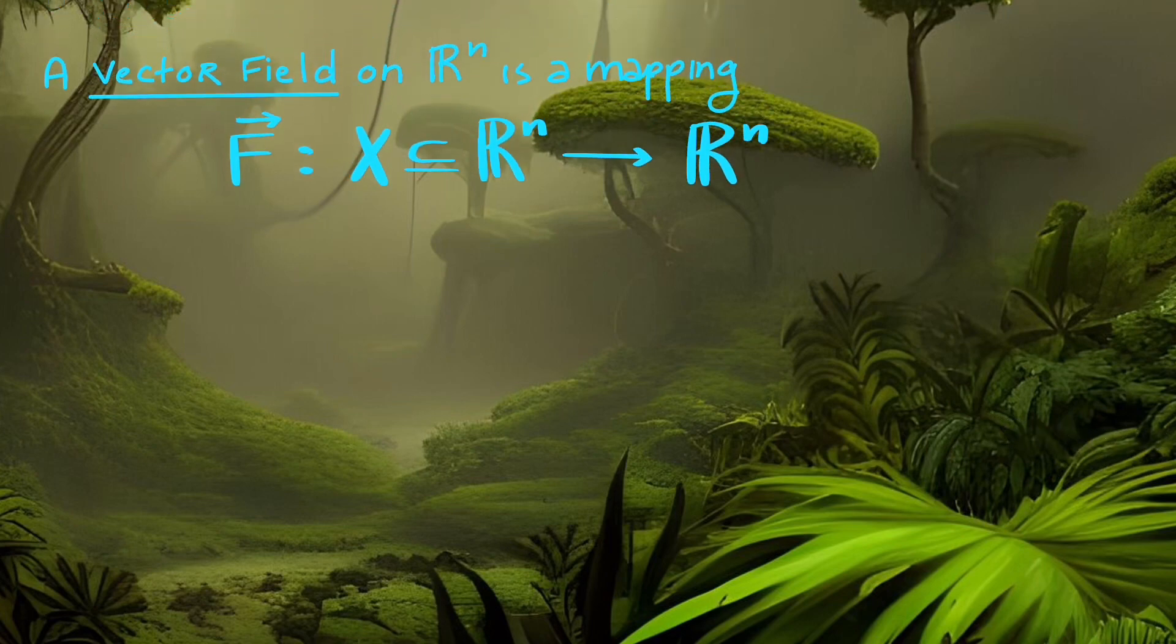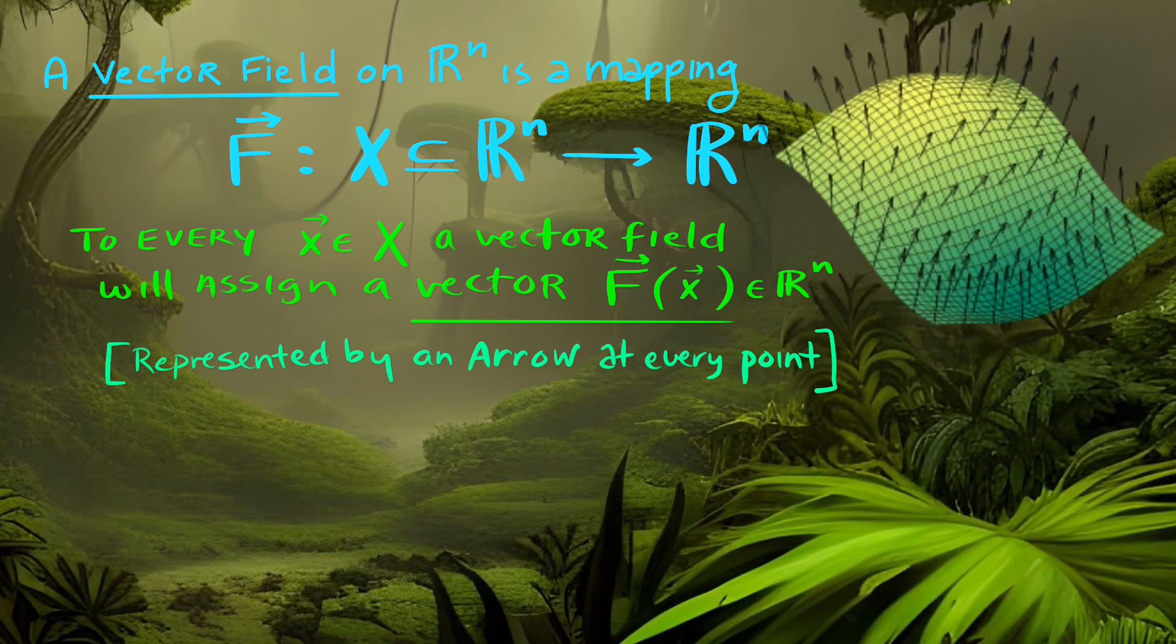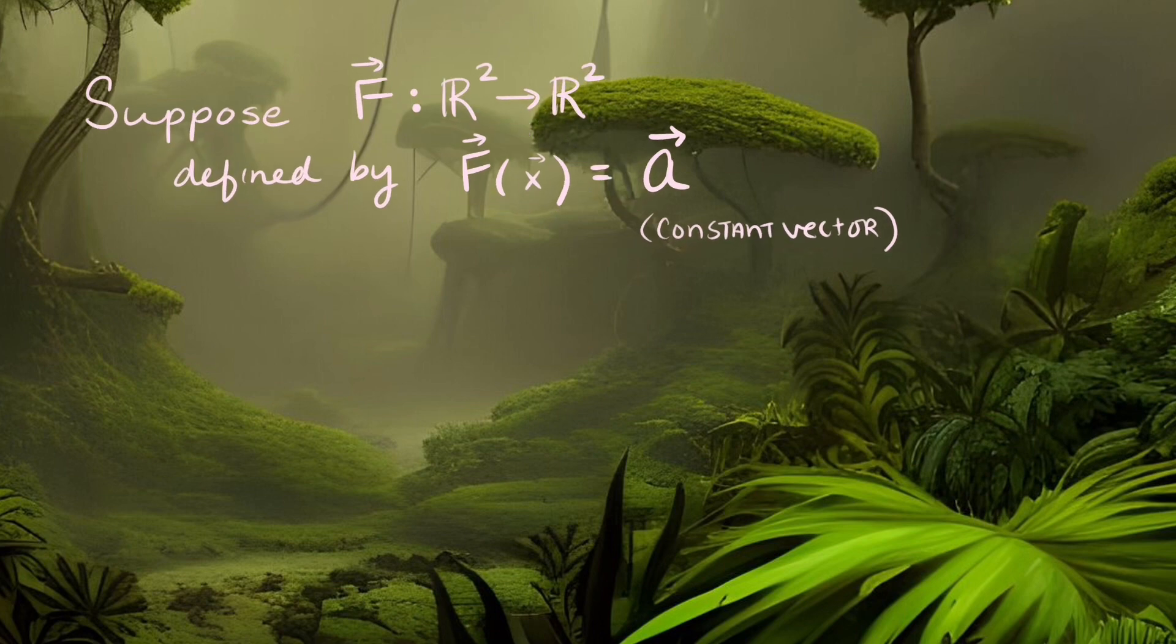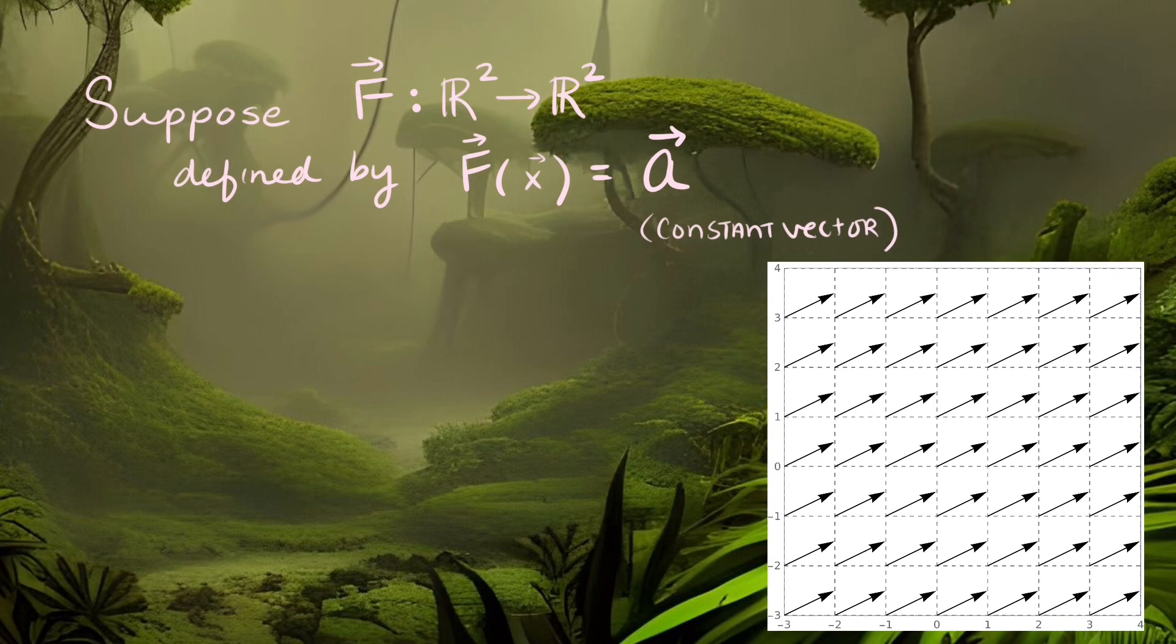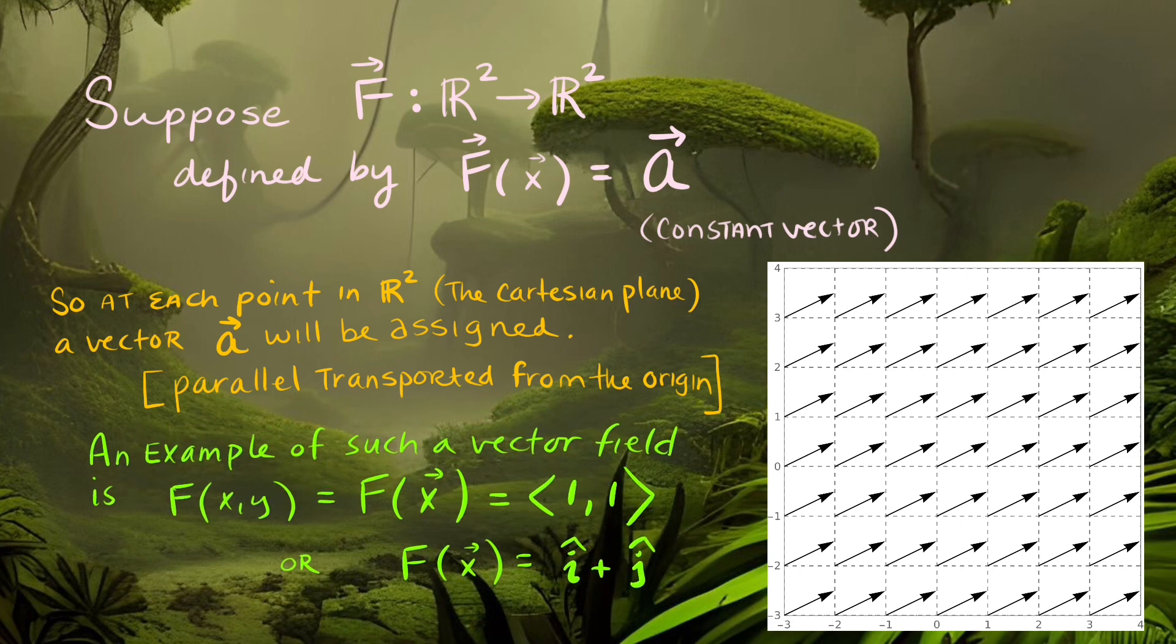A vector field on a vector space R^n is a mapping from a domain subset of R^n to R^n. For every point x in that domain space, a vector F can be assigned to that point, represented by an arrow whose tail sits at that point in space. Imagine a constant vector field given by a constant vector a. At each point we can assign that vector a. An example might be the vector field given by (1,1) or in physics notation i plus j.